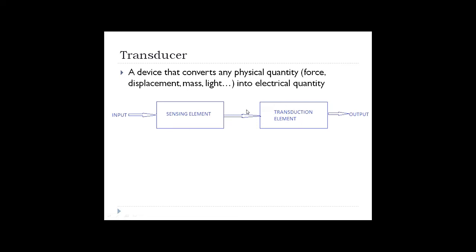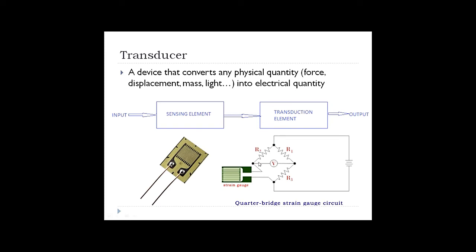For example, a strain gauge is a sensing element — it detects force or load applied to it and provides a resistance. A Wheatstone bridge circuit is the transduction element wherein this resistance is converted into electrical output. So the sensing element converts force or load into resistance — one physical parameter into another. The transduction element converts this resistance into electrical output. Therefore, a transducer has a sensing element and a transduction element.